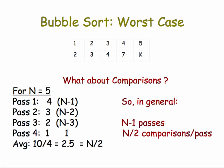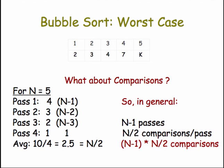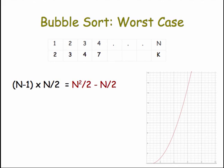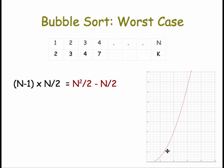So in general, to sort n cards or numbers, we have to make n minus one passes, and we need to make n over two comparisons per pass. And that gives us this formula for the number of comparisons: n minus one times n over two. So if we multiply out this expression, we get the formula n squared over two minus n over two. And if we graph it, we get this curve, it's a quadratic curve. So this graph captures the overall, the essential behavior of the bubble sort.